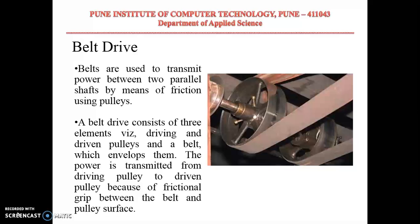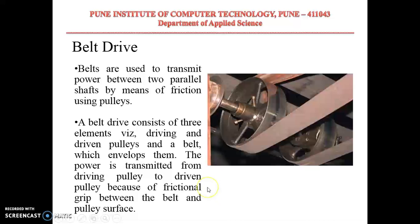In this lecture we are going to study belt drives. In a belt drive, power is transmitted from one shaft to another shaft with the help of a pulley and belt. Belts are used to transmit power between two parallel shafts by means of friction using pulleys. The parts of a belt drive include a driving pulley, driven pulley, and the belt. The belt is enveloped onto the pulleys and power is transmitted from the driving pulley to the driven pulley because of frictional grip between the belt and pulley surface.